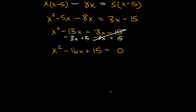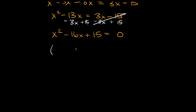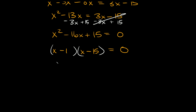Now we need to factor this. x squared factors as x and x, and two numbers that multiply to positive 15 but have a sum of negative 16 would be minus 1 and minus 15. So we get x minus 1 times x minus 15 equals 0. Setting each factor equal to 0, x is equal to positive 1 and x is equal to positive 15. So here are our two answers.